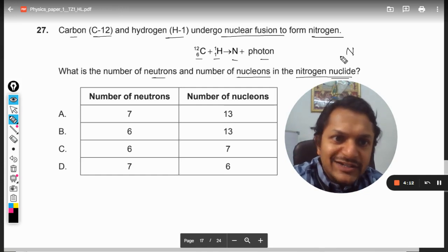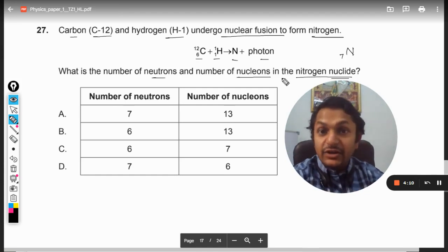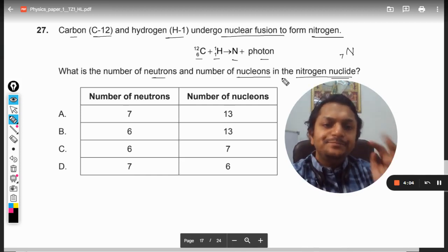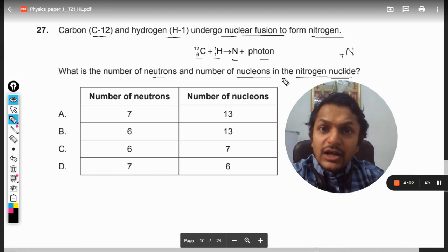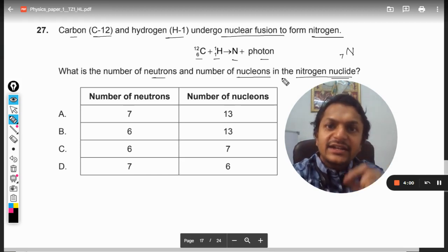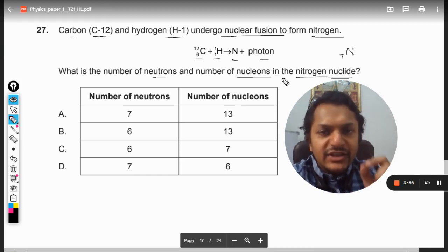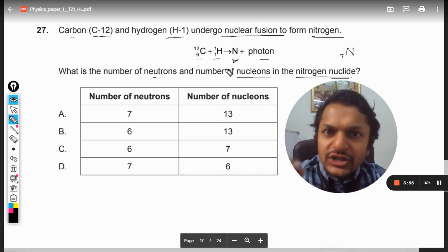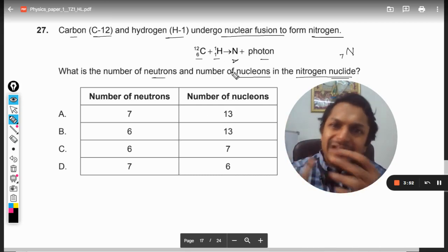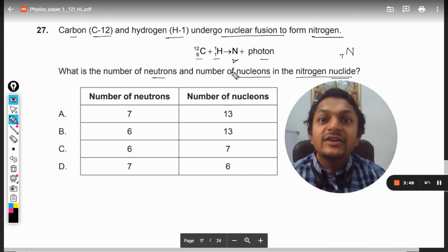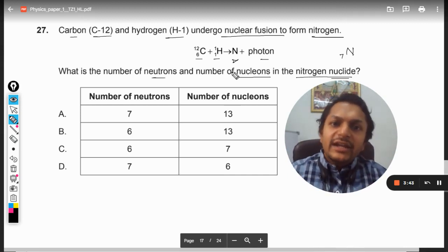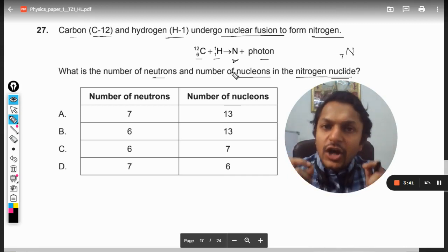First of all, the atomic number will become 6 plus 1, that is 7. And in these kinds of questions, I would like to specify one more thing to you: the element is recognized with the help of the atomic number only. Now, if they say that nitrogen has been created here, so the nitrogen has to have 7 atomic number. It cannot have 8 or 9 or something; it has to have 7 atomic number.